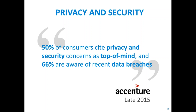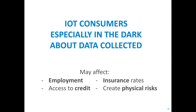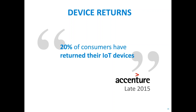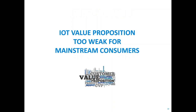On top of all this, there's been an escalation of privacy and security concerns. Accenture reported that 50% of consumers cite privacy and security concerns as top of mind, and two-thirds are aware of recent data breaches. This is especially concerning in the IoT space where consumers are completely in the dark about what data is collected about them — potentially affecting employment, credit access, insurance rates, or even creating physical risks like a hacker taking control of your door lock. This has reportedly caused 20% of consumers to return their IoT devices after buying them.